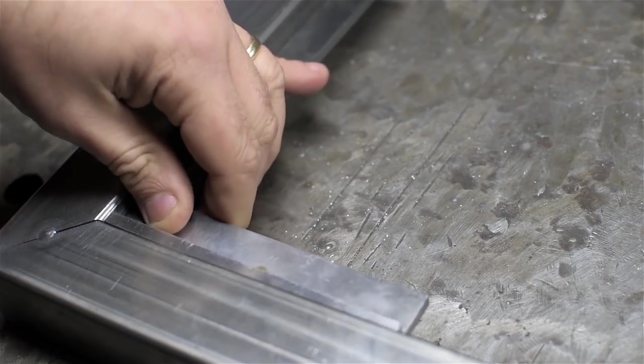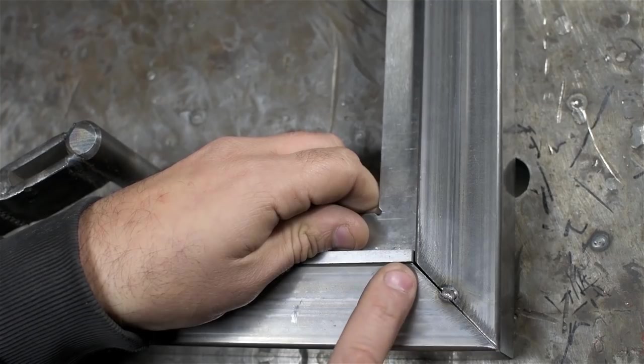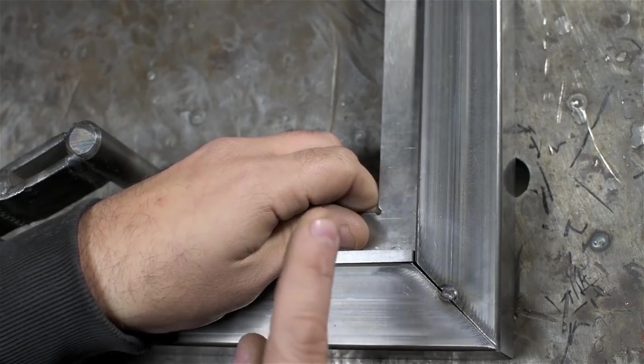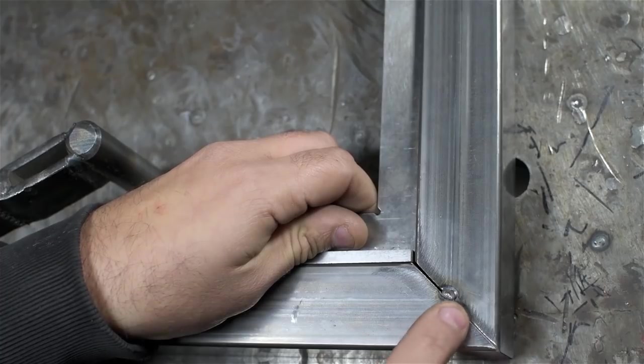This particular corner has closed up on me. The weld has pulled it shut. The square is only touching at the ends of its legs. The other two corners have done just the opposite. Now the square is touching on the corner and the end of one leg, and the other leg is just sort of floating in space there.